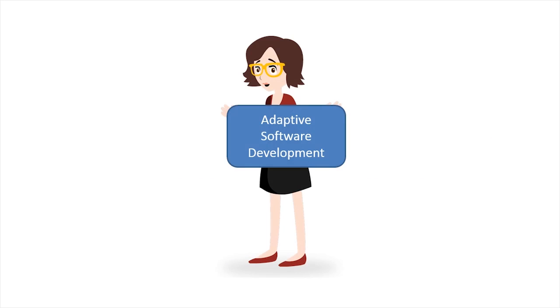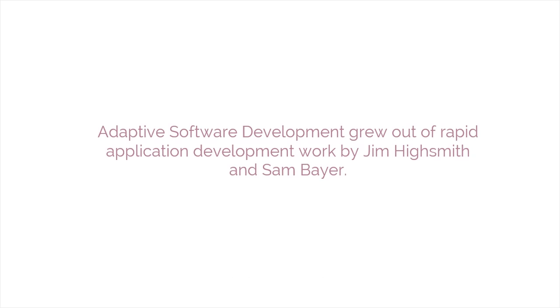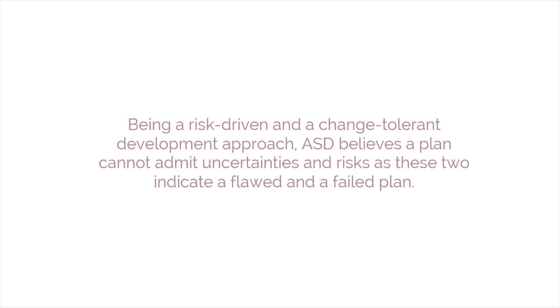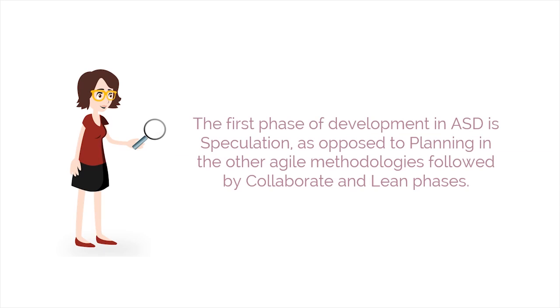The seventh method is Adaptive Software Development. ASD grew out of rapid application development work by Jim Highsmith and Sam Bayer. The highlights of ASD are constant adaptation of processes to the work at hand, provision of solutions to problems surfacing in large projects, and iterative, incremental development with continuous prototyping. Being a risk-driven and change-tolerant approach, ASD believes a plan cannot admit uncertainties and risks, as these indicate a flawed and failed plan. ASD is feature-based and target-driven, with its first phase called speculation — as opposed to planning in other Agile methodologies — followed by collaborate and learn phases.